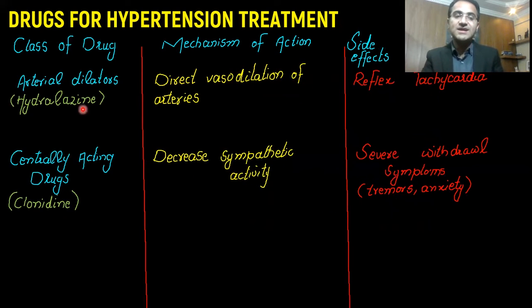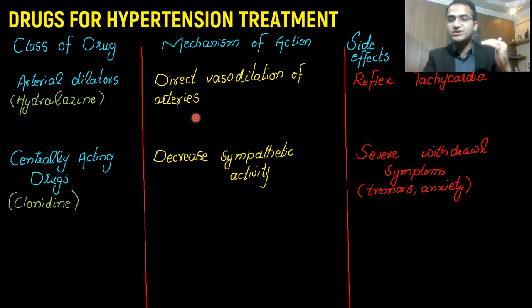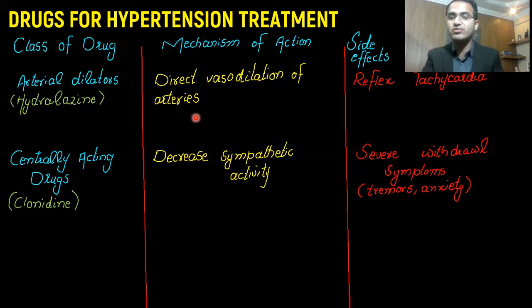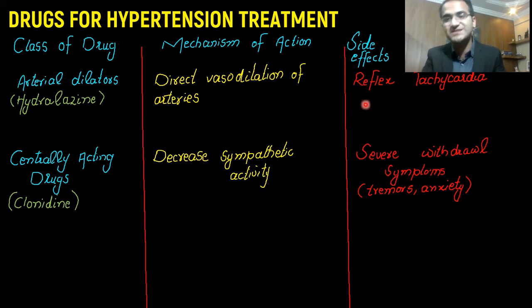Arterial dilators include hydralazine. They directly act on blood vessels and cause vasodilation. When arteries are directly dilated, blood pressure suddenly drops. When blood pressure suddenly drops, the heart starts to pump more rapidly — this is called reflex tachycardia. So the side effect of arterial dilators is that they cause a sudden drop in blood pressure due to arterial vasodilation, which results in reflex tachycardia.